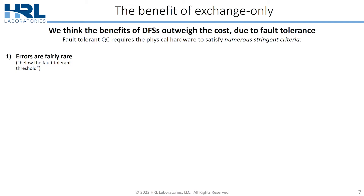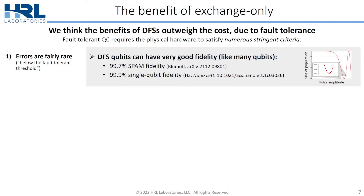Despite the drawbacks, we believe the benefits of DFS qubits far outweigh the costs, and I'll argue this in the context of fault tolerance. Fault-tolerant quantum computing requires stringent criteria: most commonly that errors are rare — being below the fault-tolerant threshold. On that metric, DFS qubits look good: we recently published a paper showing 99.7% SPAM fidelity, and have shown 99.9% single-qubit fidelity multiple times. The fidelity of our operations is up there with the best.